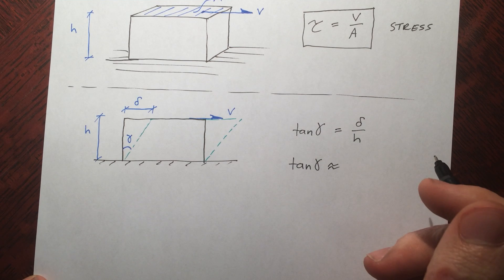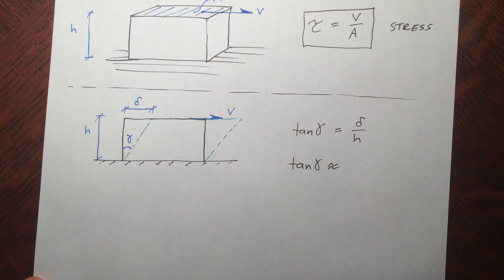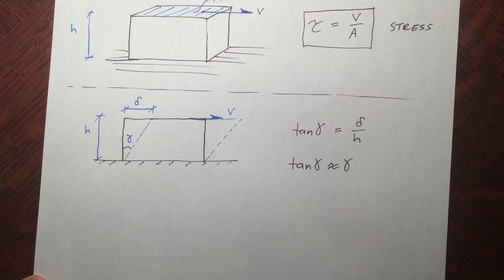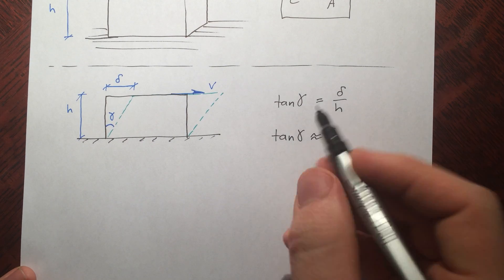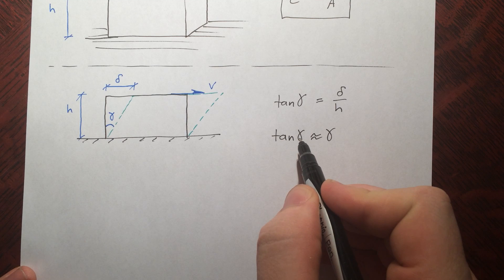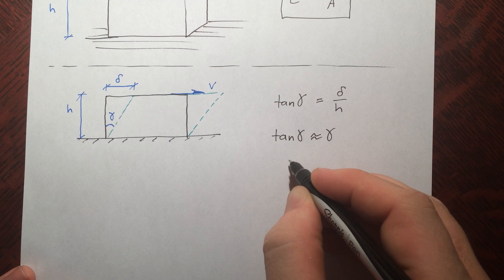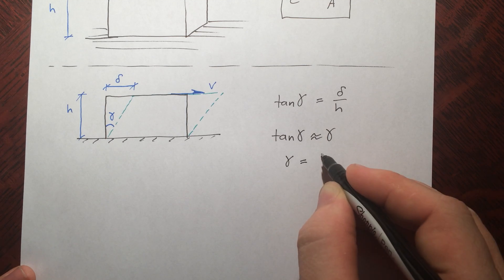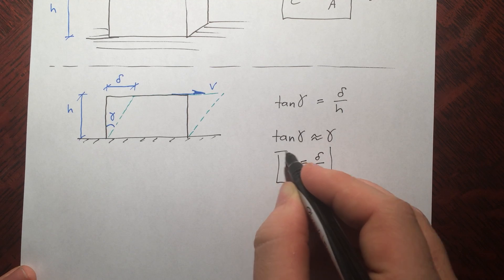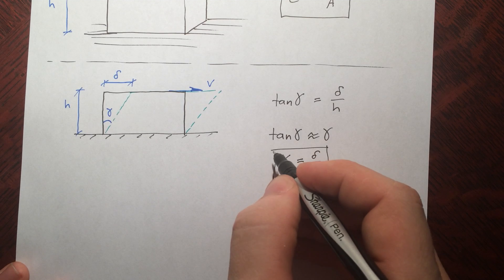like it's going to be most of the time in engineering applications, you don't want your building to move this much, it's probably only going to move a few millimeters. It's approximately equal to gamma. You can try this on your calculator, tangent of 0.1 is close to 0.1, tangent of 0.001 is even closer to 0.001. So now we can write gamma equals delta over h.